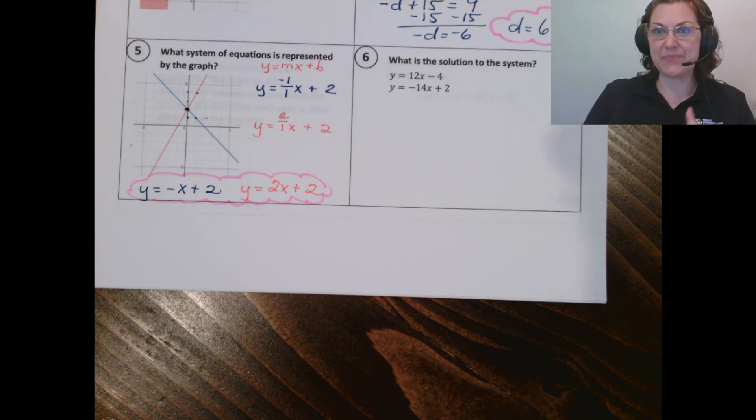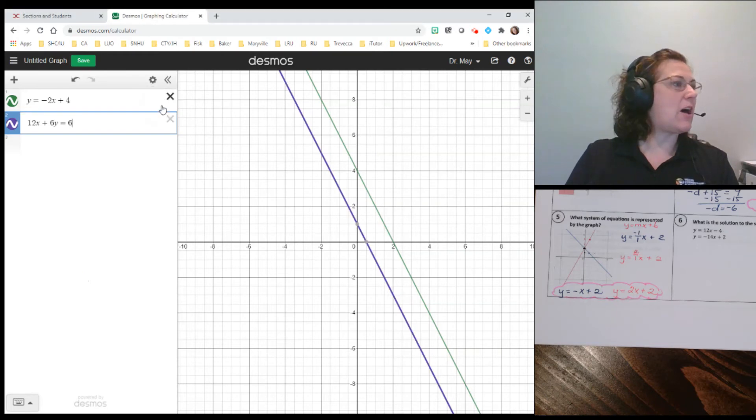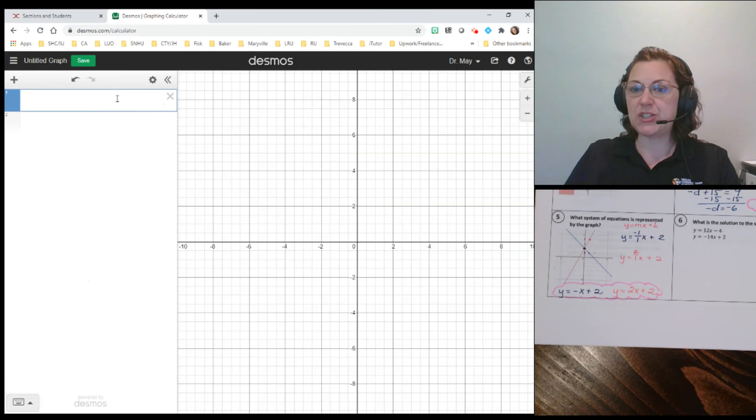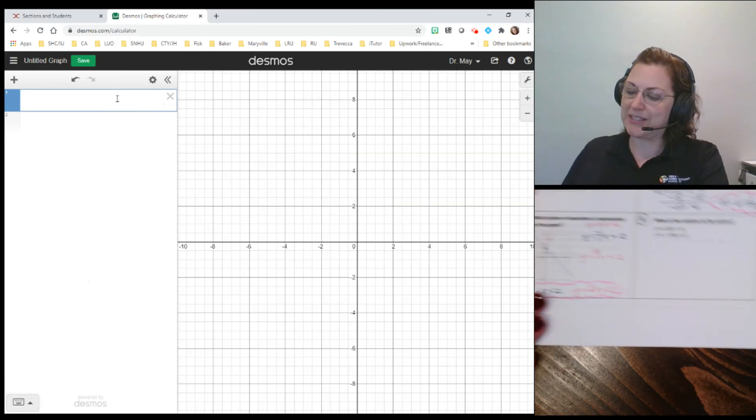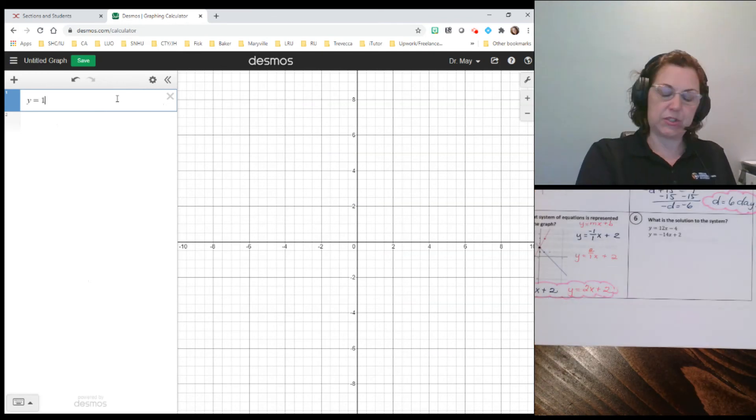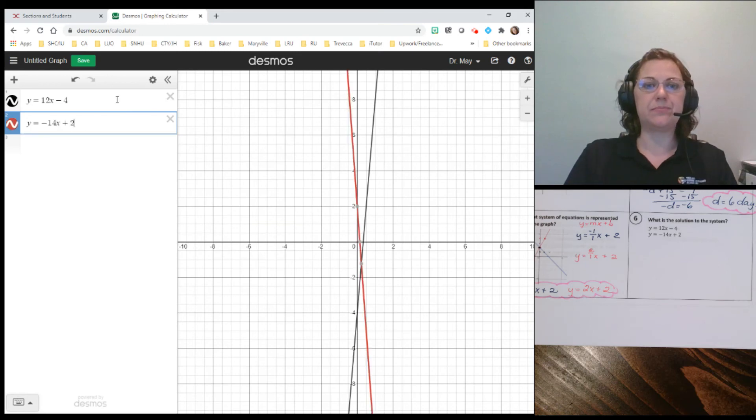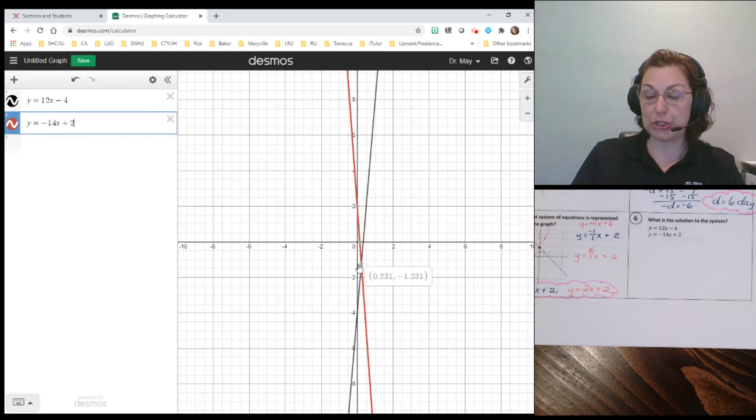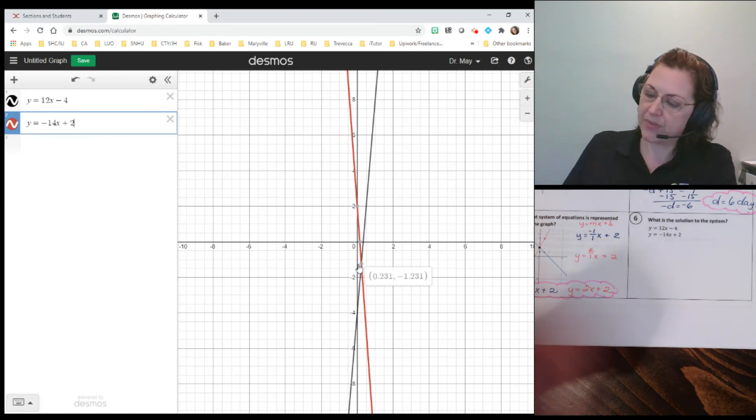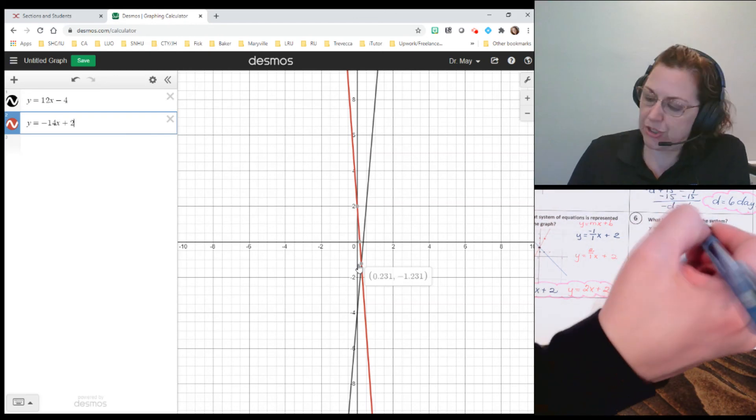All right, one more on this page. We're finding the solution again. So I'm going to switch back over to our Desmos. Let's X out the equations we had before, and we'll put in the two equations we see here for number six. We have y equals 12x minus four, and we have y equals negative 14x plus two. Remember, use your calculator, I'm sorry, your cursor. Go and highlight those two, that intersection there. And that is your solution.